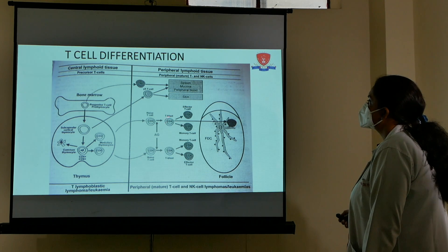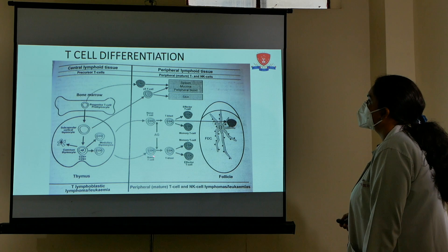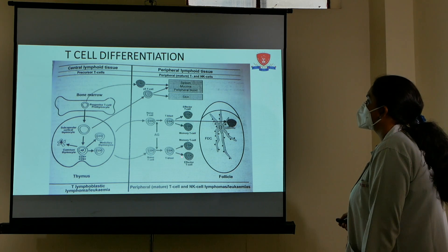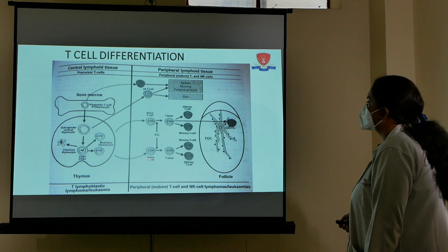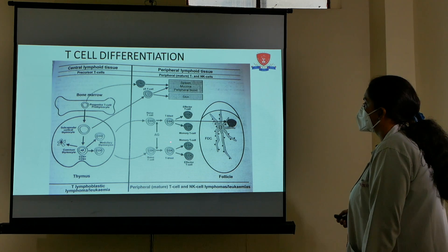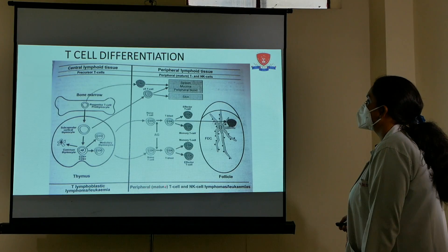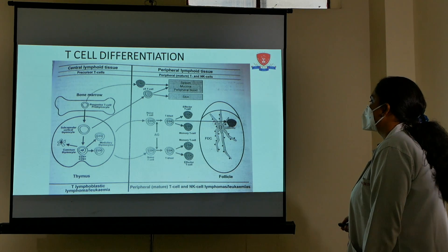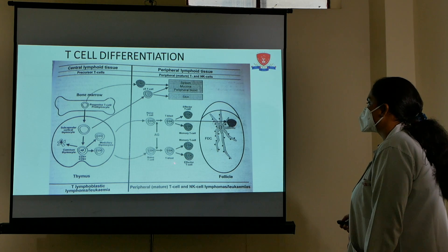The naive T cell exists as CD4 type and CD8 type, which then develop into different types of cells. If this area is involved in lymphoma formation, they are called peripheral mature T cell and NK cell lymphomas. NK cells are neutral-type cells which do not present antigens like B or T cells.